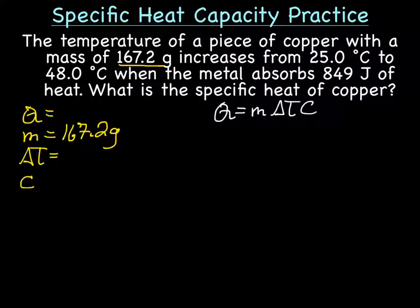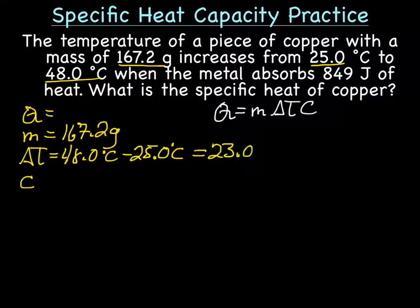We know that the temperature changes. It starts at 25 degrees Celsius and ends up at 48 degrees Celsius. So our delta T is 48 degrees Celsius minus 25 degrees Celsius, giving us a delta T of 23 degrees Celsius.